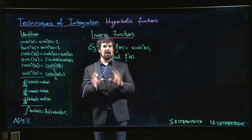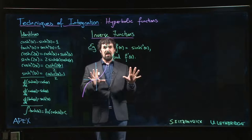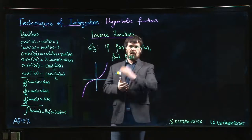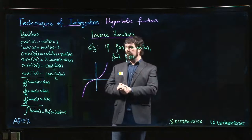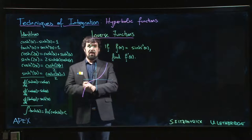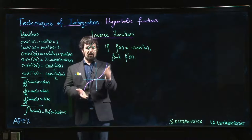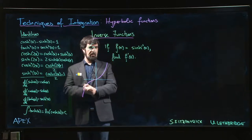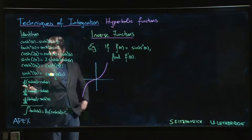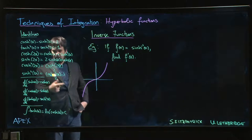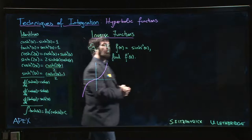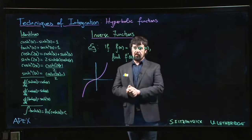In the next few videos we're going to look at inverses of the hyperbolic functions, starting with hyperbolic sine because it's fairly clear from the graph that this is a one-to-one function — it's increasing over its entire domain. The derivative of hyperbolic sine is hyperbolic cosine, which is always positive, so it's definitely a one-to-one function and we expect to find an inverse.